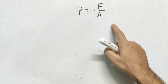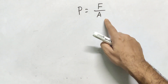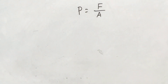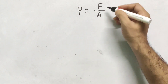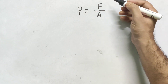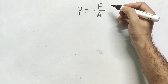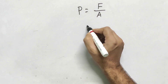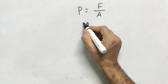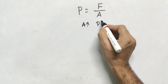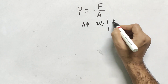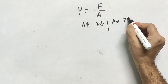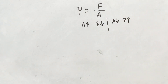From the equation pressure equals force per unit area, we can say: if force is constant and area is increased, pressure decreases; and if area is decreased, pressure will increase. Let me give you a practical example to prove that.